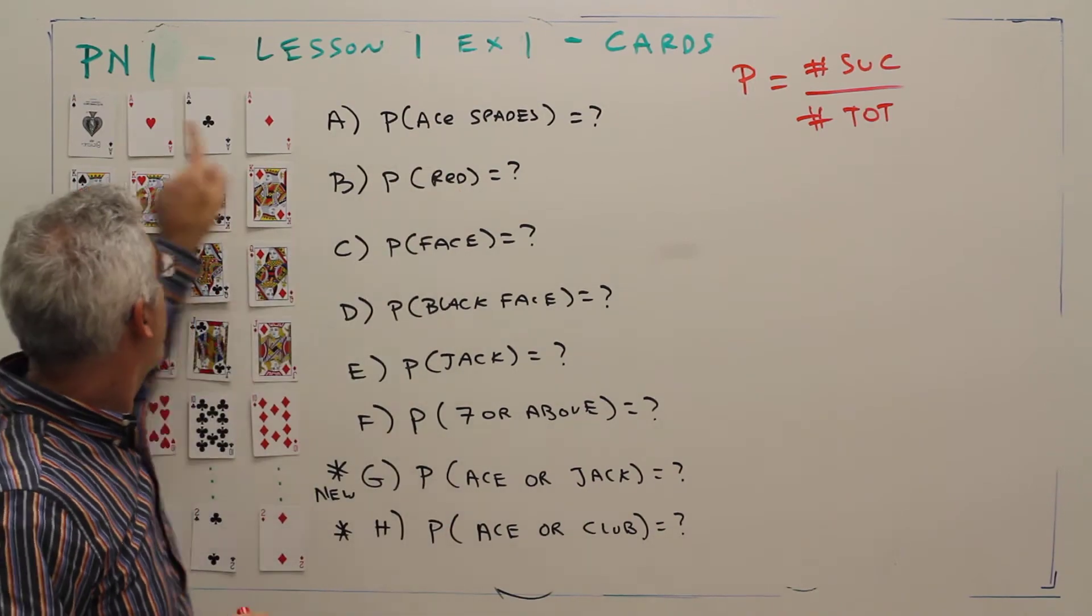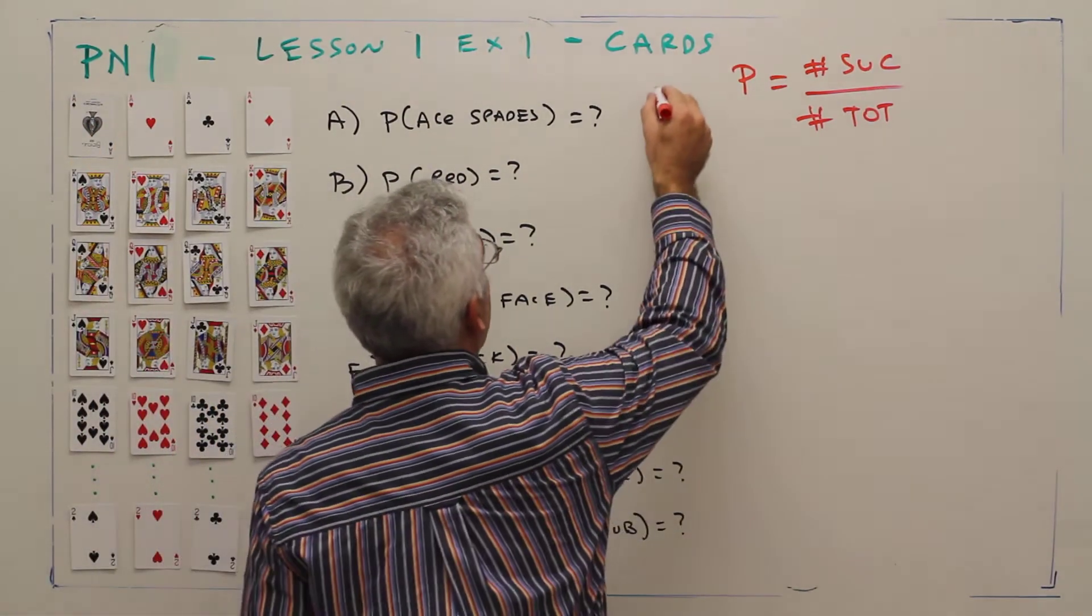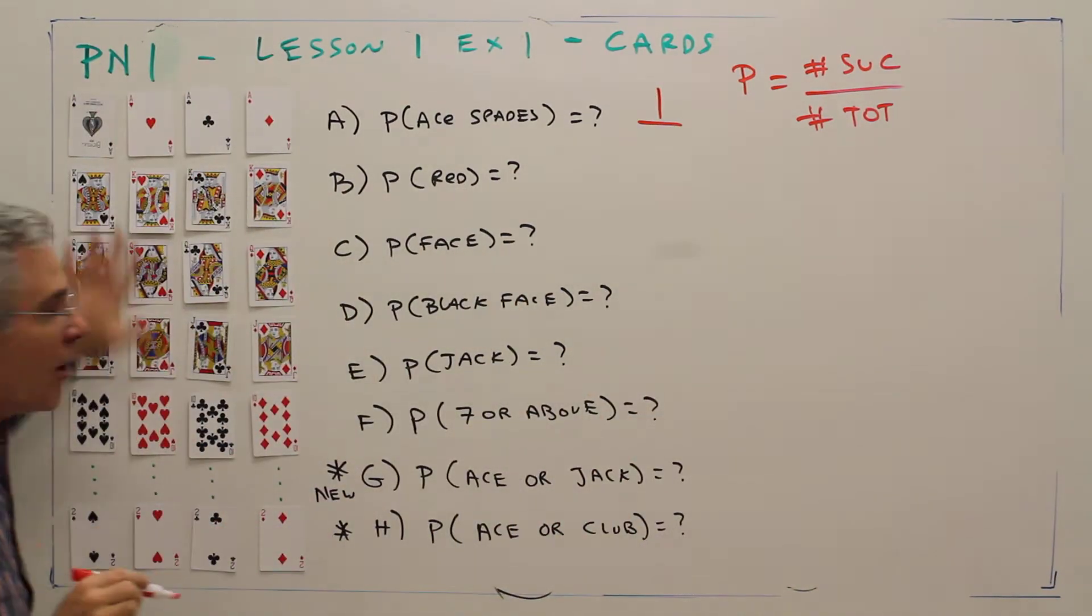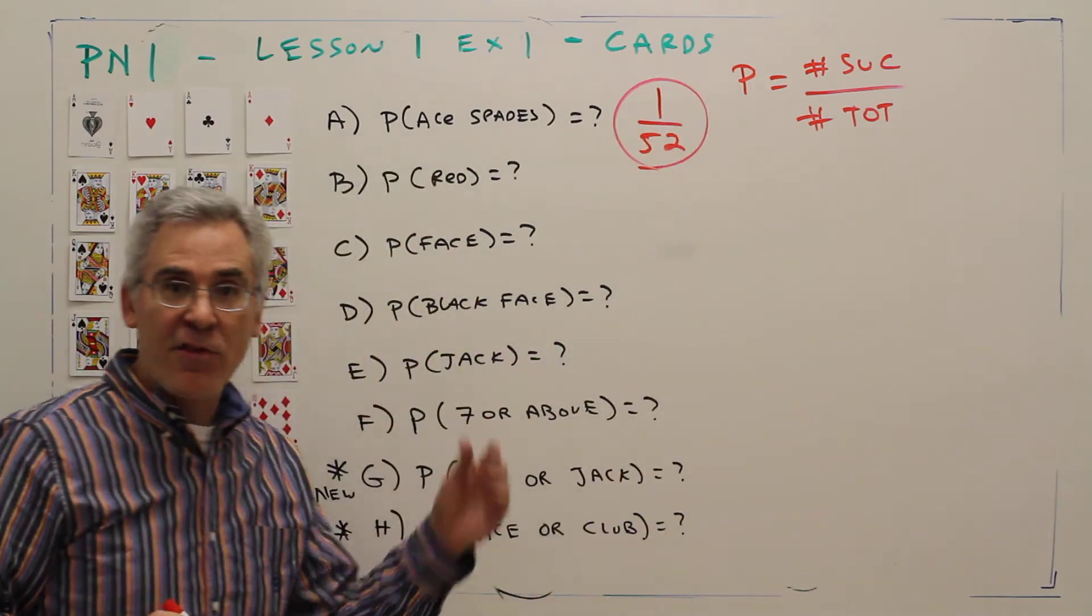Alright, there's one ace of spades, so there's one successful outcome out of a total of 52 cards. That's 1/52, and that's the answer.